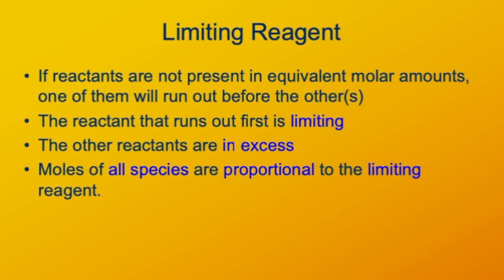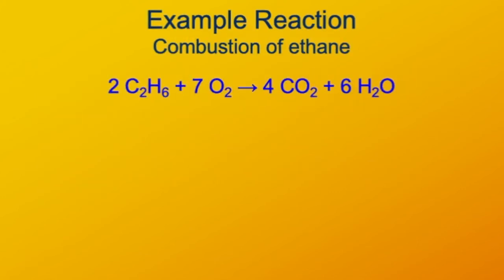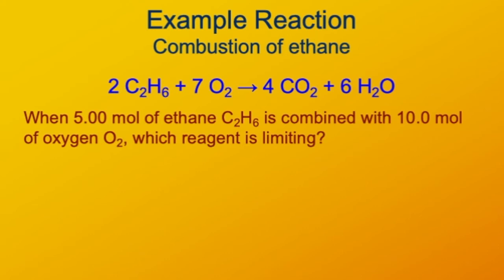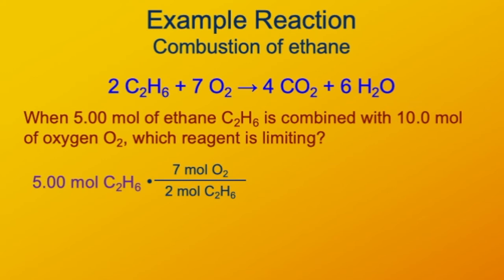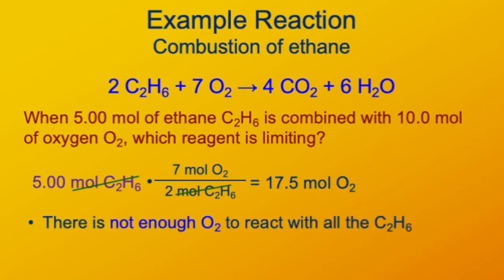Using the same reaction, if we combine 5 moles of ethane and 10 moles of oxygen, we find which one is limiting. Starting with 5 moles of ethane and converting using 7 moles of oxygen per 2 moles of ethane, we find the equivalent amount of oxygen is 17.5 moles. We only have 10 moles present, so there's not enough oxygen to react with all the ethane — oxygen is the limiting reagent.